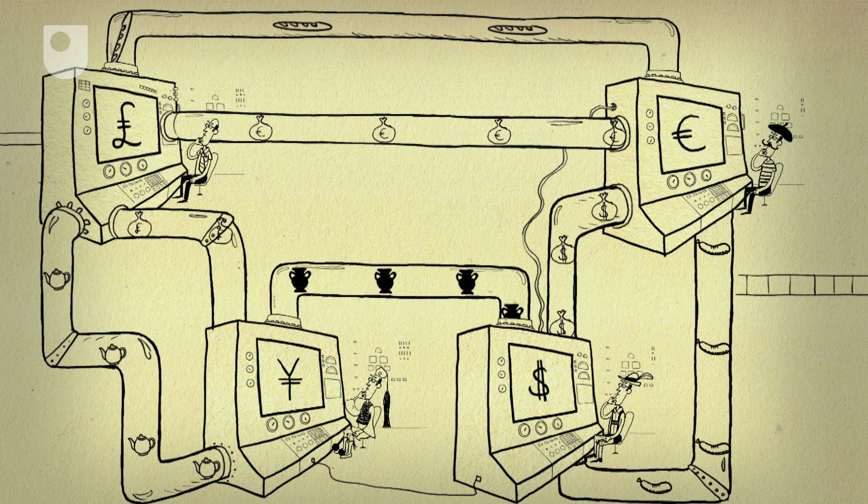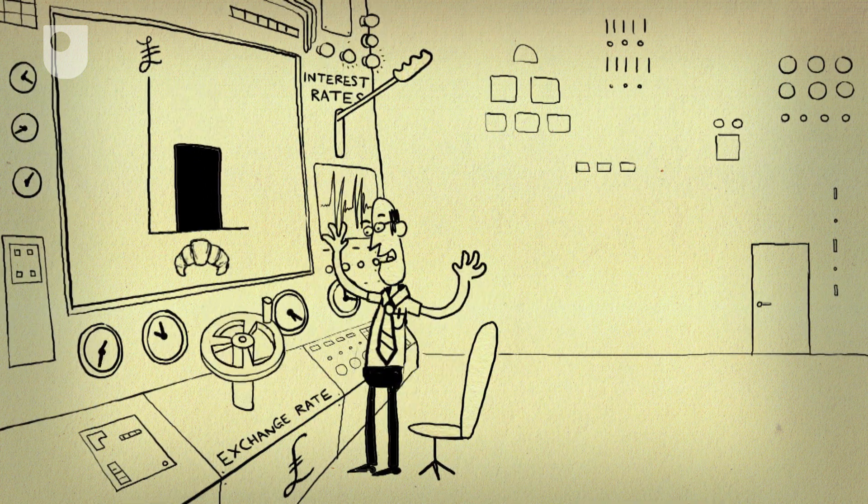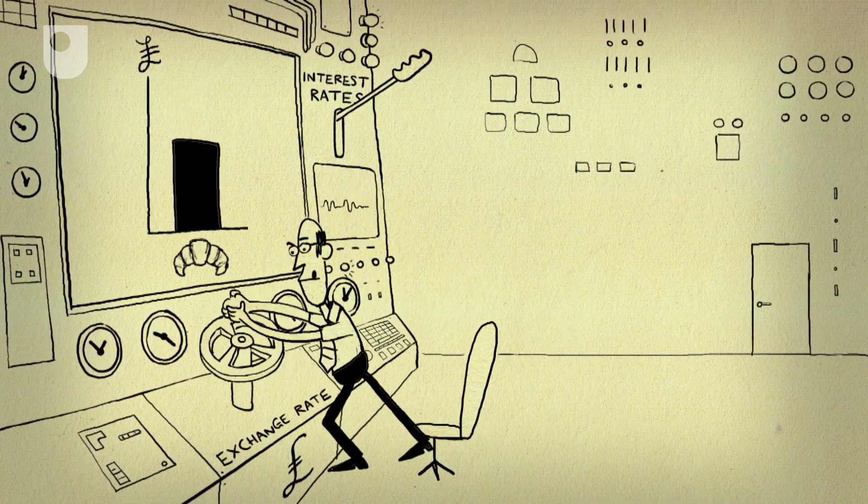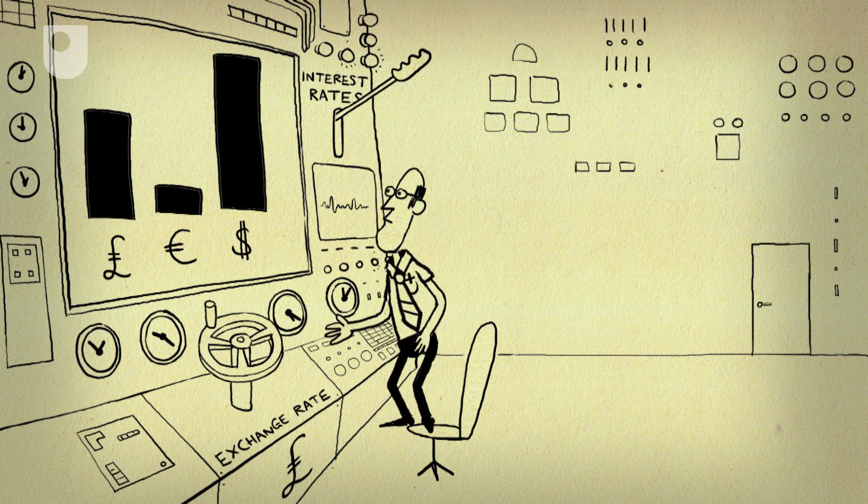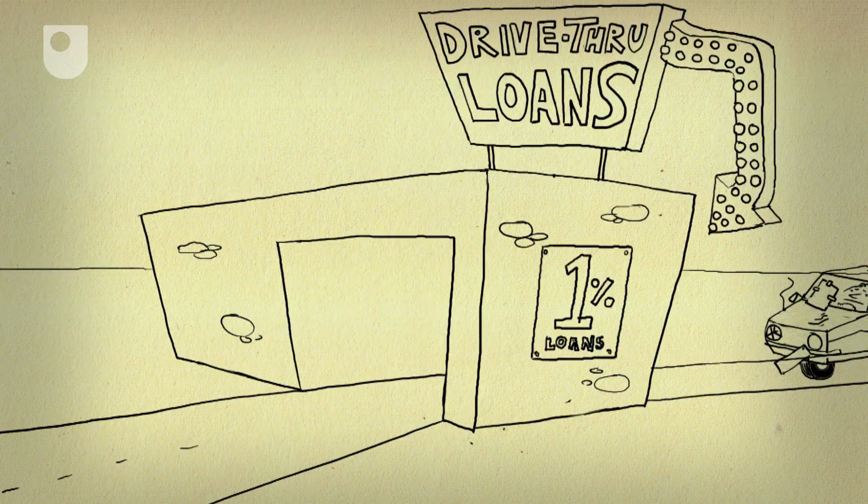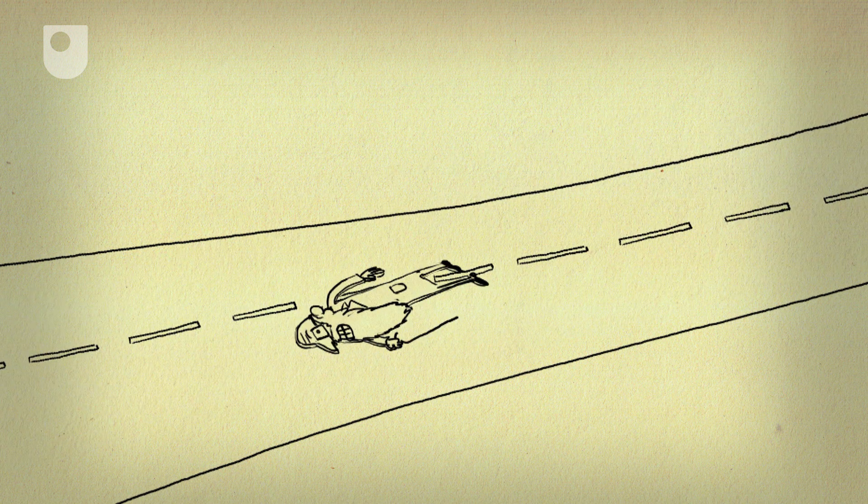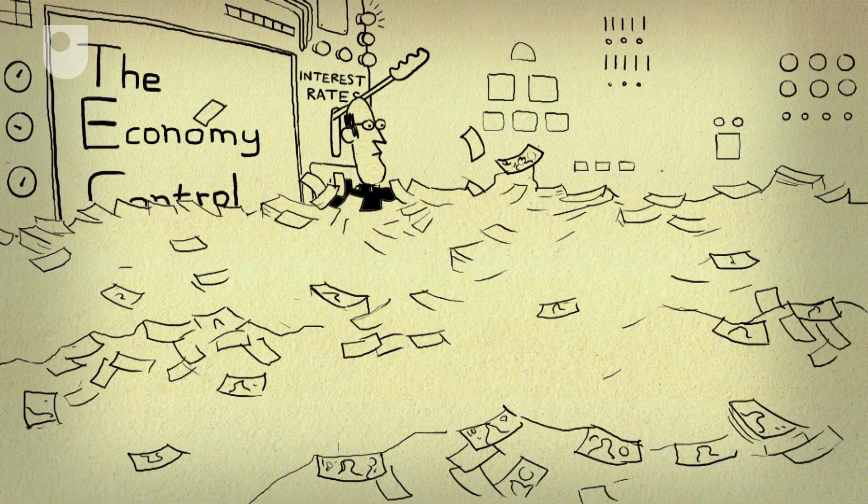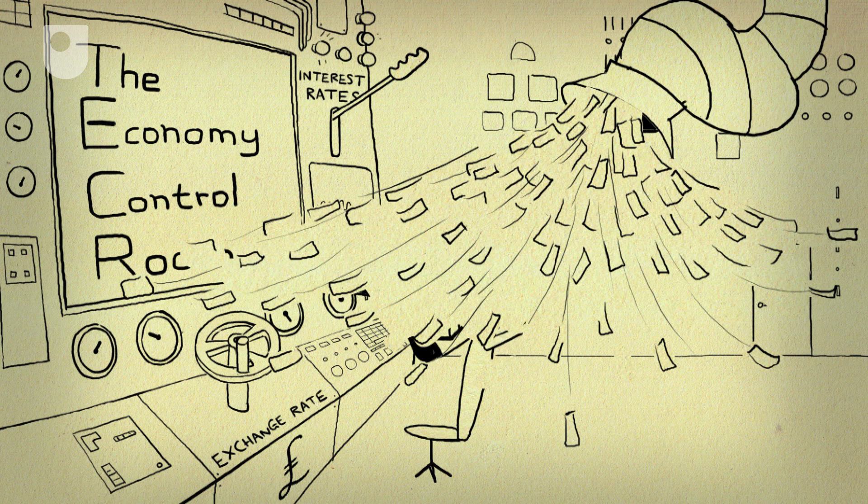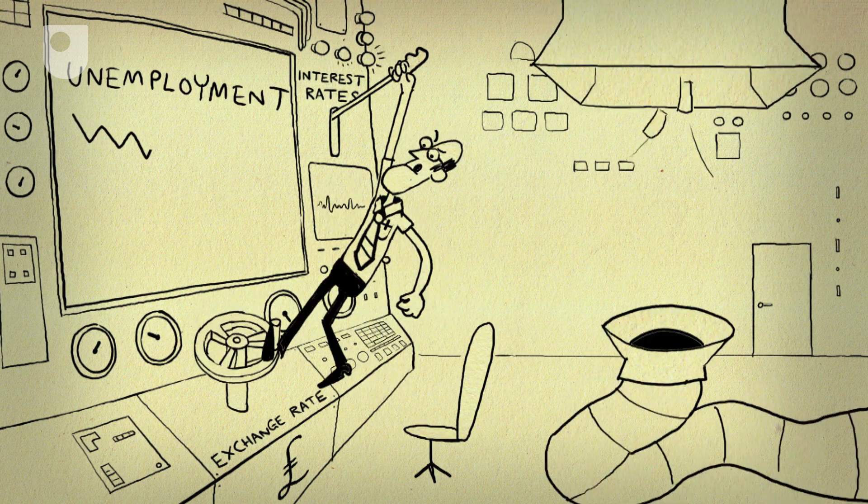There are three things that governments are particularly keen on. They like to keep the exchange rate stable, so that import and export prices don't suddenly jump around. They also like to control interest rates, so they can keep borrowers happy without upsetting savers. And they like to let money flow in and out of their country without causing too much disruption.